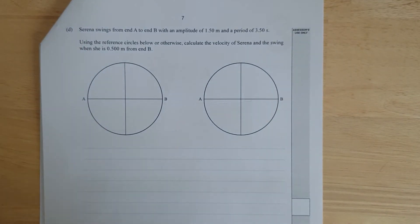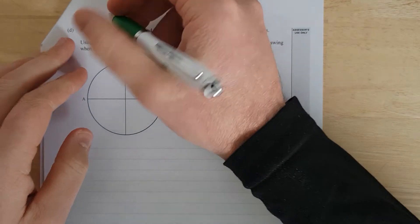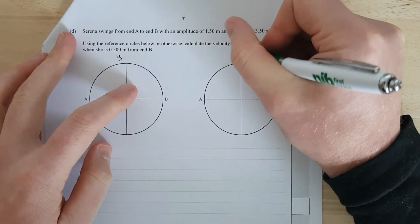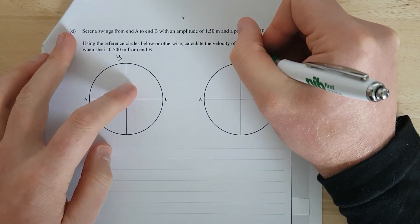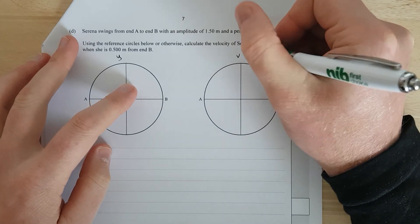Serena swings from end A to B with an amplitude of 1.5 meters in a period of 3.5 seconds. Use a reference circle below to calculate the velocity of Serena in the swing when she is half a meter from end B. Using the reference circles below. Okay, this is set up well, isn't it? So, this one we'll use for position Y, and this one we'll use for velocity V.